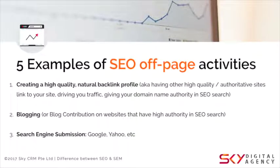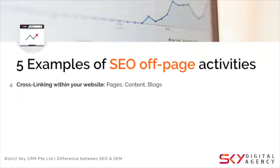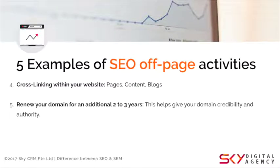Point three: always submit your website URLs to search engines like Google and Yahoo. Note that 67% of online searches are done on Google, making it a must. Yahoo is second, and submission isn't difficult, so why not? Point four: cross-link within your website. This helps users spend more time on your site by guiding them through content with internal links, improving the flow — and the more time visitors spend on your site, the better for your SEO ranking.